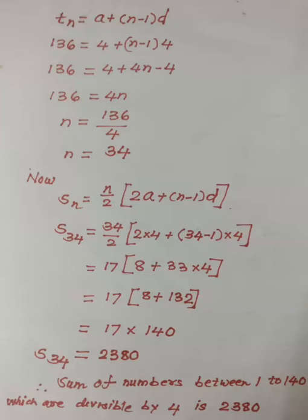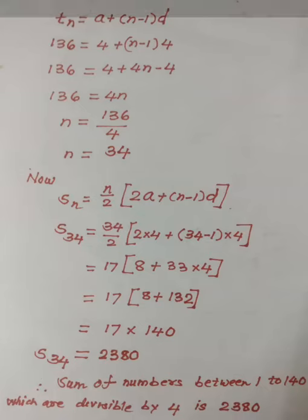We substitute n = 34: S34 = (34/2) × [2 × 4 + (34 - 1) × 4] = 17 × [8 + 33 × 4] = 17 × [8 + 132] = 17 × 140 = 2380.